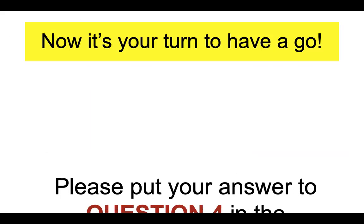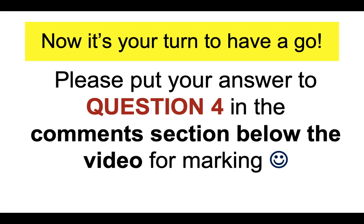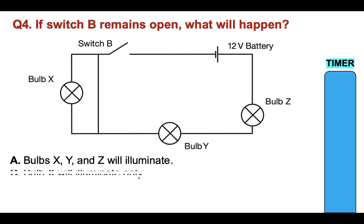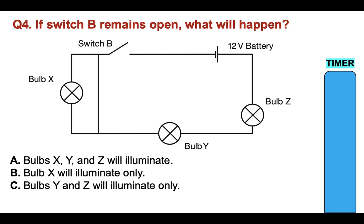Now it's your turn to have another go. Please put your answer to question four in the comments section below the video for marking. You have the time it takes the timer to go down. If switch B remains open, what will happen? A, bulbs X, Y and Z will illuminate; B, bulb X will illuminate only; C, bulbs Y and C will illuminate; or D, no bulbs will illuminate. Please put your answer in the comments section below the video.